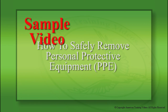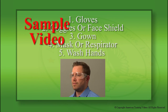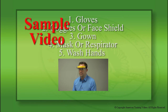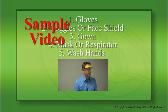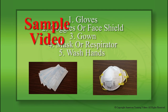Gloves are considered the most contaminated pieces of PPE and are therefore removed first. The face shield or goggles are next because they are the most cumbersome and would interfere with the removal of other PPE. The gown is third in this sequence, followed by the mask or respirator.